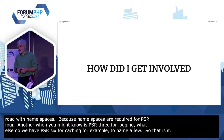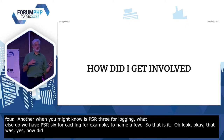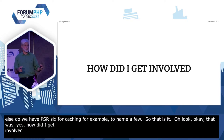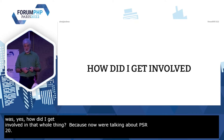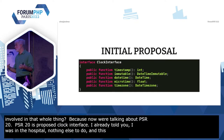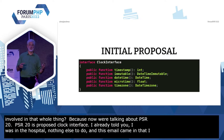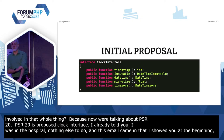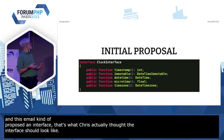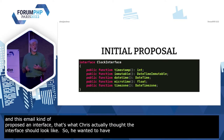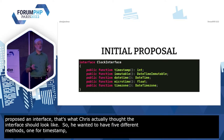So how did I get involved in that whole thing? Because now we are talking about PSR-20. PSR-20 is the proposed clock interface. As I already told you, I was in hospital, nothing else to do, and this email came in that I showed you at the beginning. It proposed an interface — what Chris actually thought the interface should look like. He wanted to have five different methods: one for a timestamp, one for an immutable object, one for a datetime, one for a microtime, and one for a timezone.